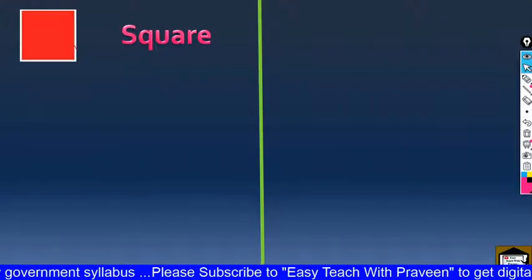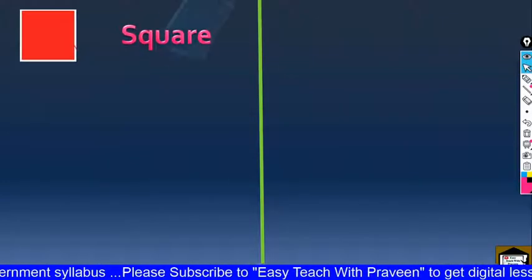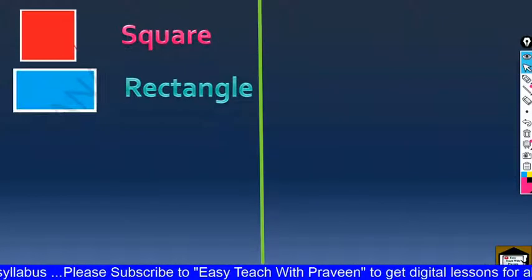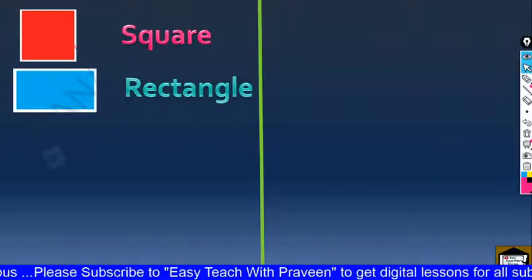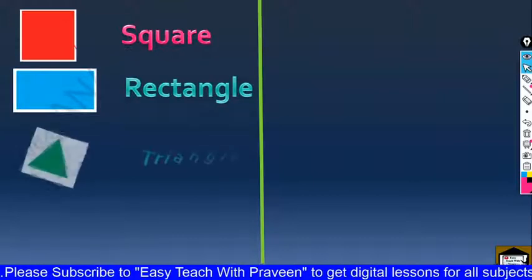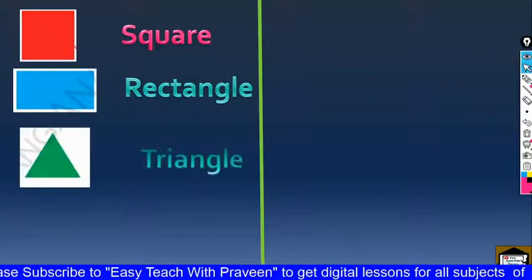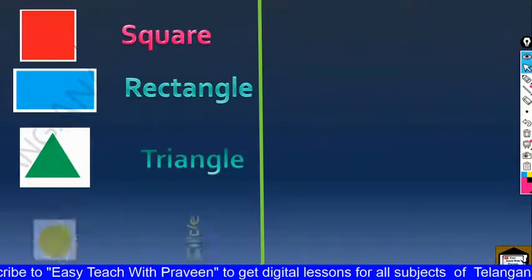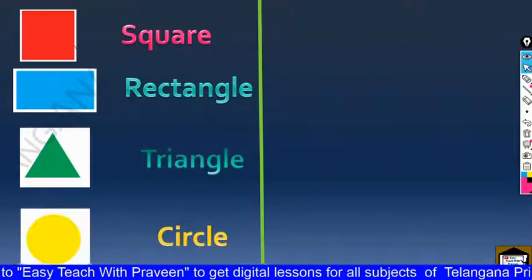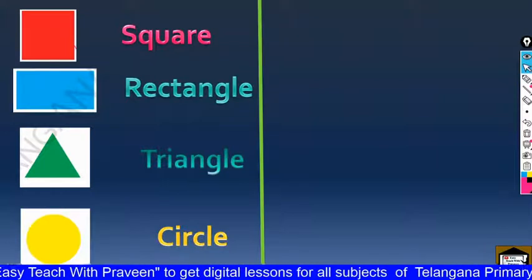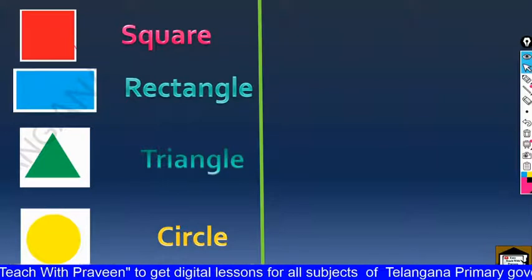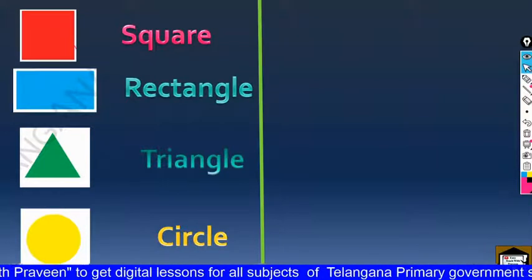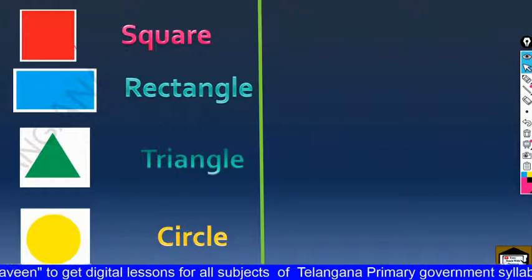Square, rectangle, triangle, and circle — very good! We have similar objects. Now we will look at 2D shapes and 3D shapes.